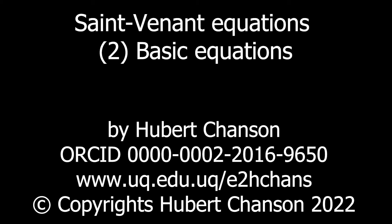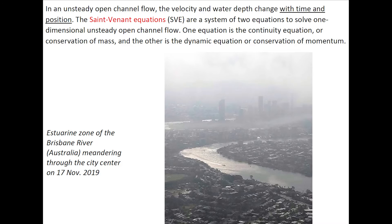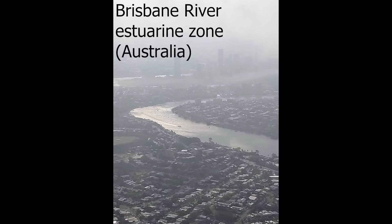In an unsteady open-channel flow, the velocity and water depth change with time and position. The Saint-Venant equations are a system of two equations to solve one-dimensional unsteady open-channel flow. The following photograph illustrates a classical application of unsteady open-channel flow — that of the Brisbane River meandering through the city center.